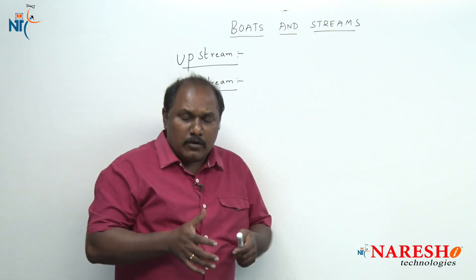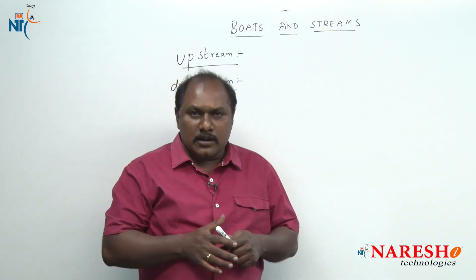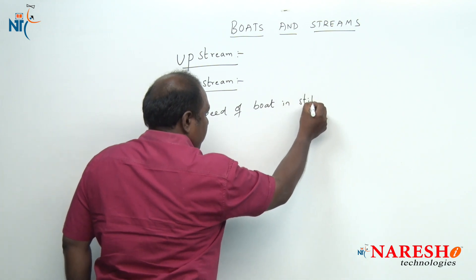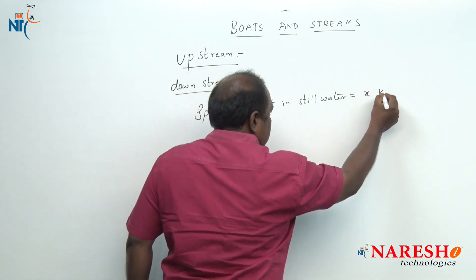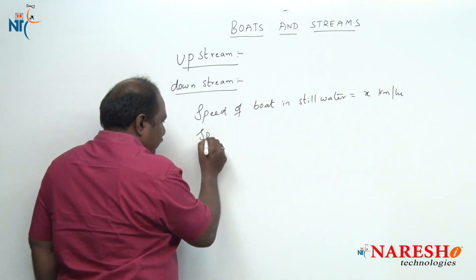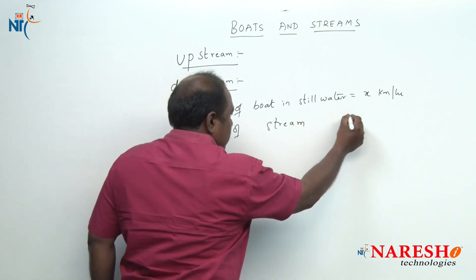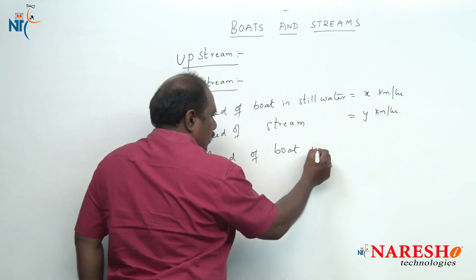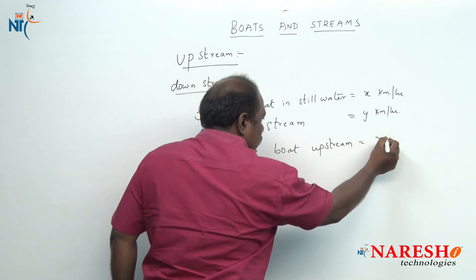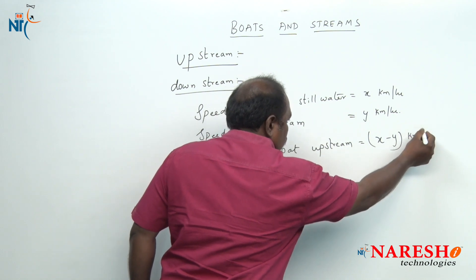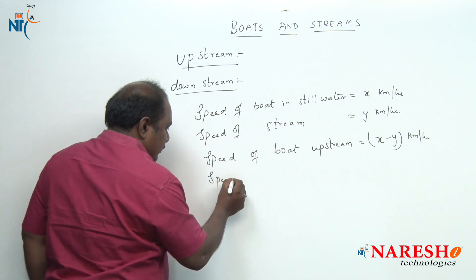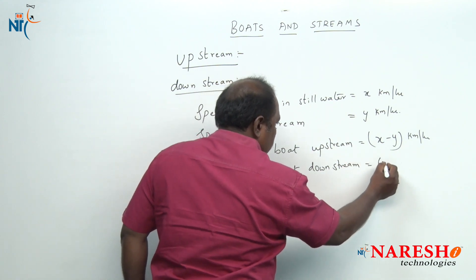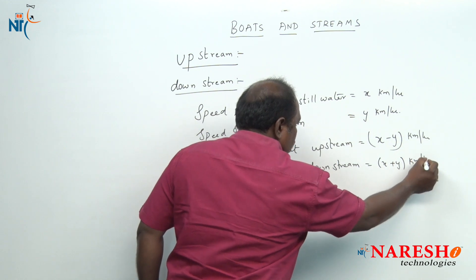Coming to the formulas: if the speed of a boat in still water is x kilometers per hour and the speed of the stream is y kilometers per hour, then the speed of the boat upstream will be equal to x minus y kilometers per hour, and the speed of the boat downstream will be equal to x plus y kilometers per hour.